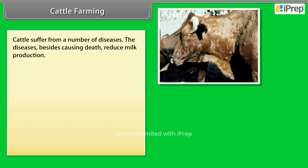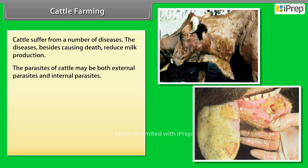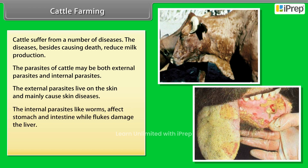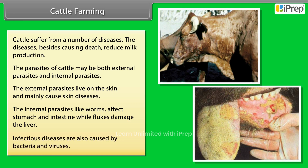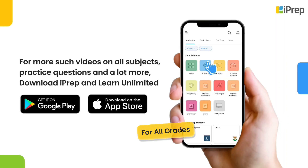Cattle suffer from a number of diseases. The diseases, besides causing death, reduce milk production. The parasites of cattle may be both external parasites and internal parasites. External parasites live on the skin and mainly cause skin diseases. Internal parasites like worms affect the stomach and intestine, while flukes damage the liver. Infectious diseases are also caused by bacteria and viruses. Vaccinations are given to farm animals against many major viral and bacterial diseases.